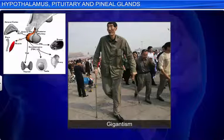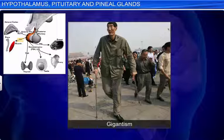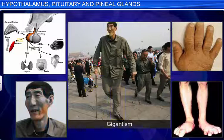Conversely, hypersecretion of the growth hormone during childhood causes gigantism, which leads to an abnormal increase in the length of the bones. Persons affected by gigantism have extraordinarily long limbs and grow very tall, but their body proportions are about normal. Hypersecretion of growth hormone in adults causes acromegaly, characterized by the abnormal growth of the hands, feet, and face, especially of the lower jaw.